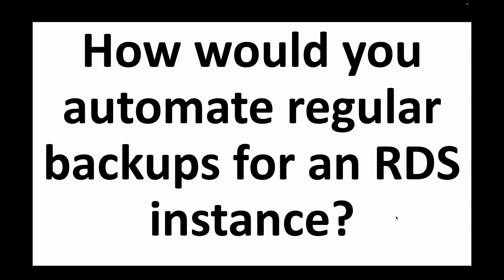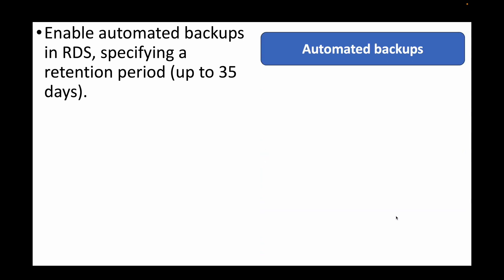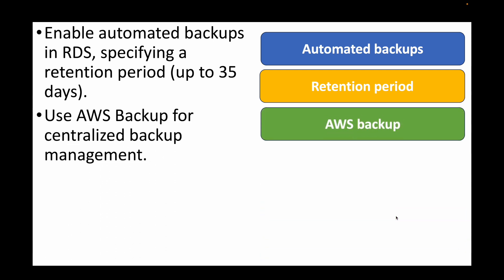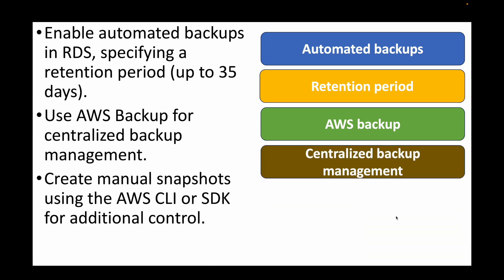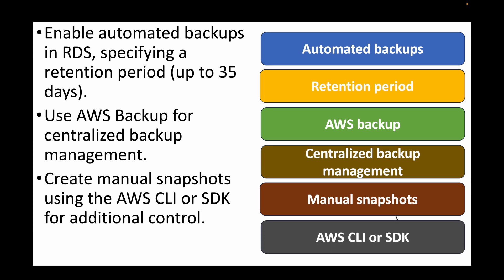The next question is: how do you automate regular backups for an RDS instance? We can enable automated backups — RDS provides both manual and automated backup options. We can enable automated backups and specify the retention period for how long backups should be available, with a maximum of 35 days. You can also use AWS Backup for centralized backup management, and you have the option of creating manual snapshots at any point from the console, CLI commands, or SDKs.